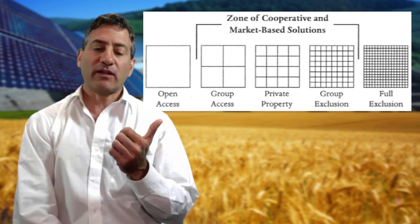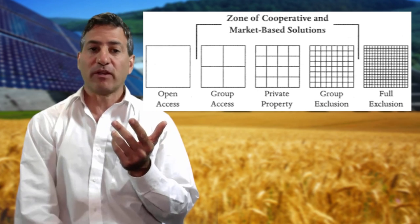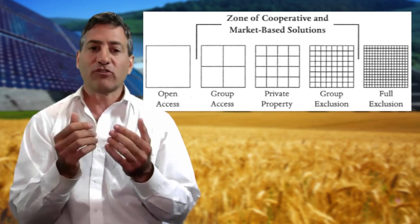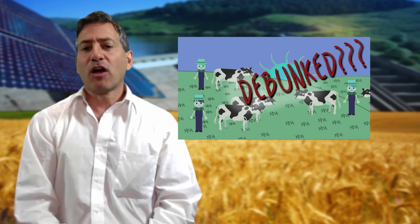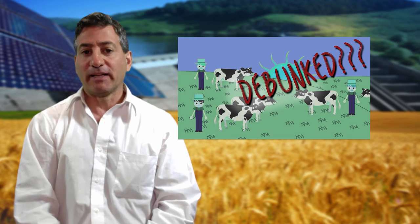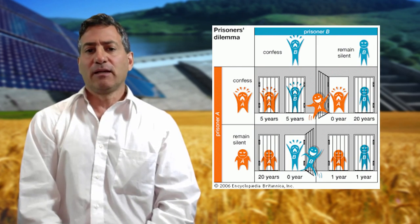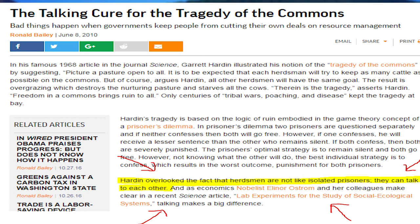The logic of the tragedy of the commons seemed unassailable to some, so that on the so-called left there were calls for more state control of resources with more regulation and enforcement, while on the so-called right there were calls for privatization of all possible resources with state-enforced property rights. The flaw in the reasoning, as pointed out by leaders of indigenous groups and the anthropologists studying them, is that the prisoner is prevented from communicating, while outside of a prison there is the possibility of open communication, reinforced by cultural mechanisms and moral imperatives, that make it possible to manage resources collectively.